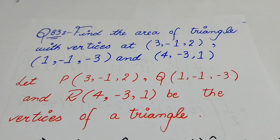First, let's see the statement. Find the area of a triangle with vertices at (3, -1, 2), (1, -1, -3), and (4, -3, 1). We have a triangle and we have an area to find out.